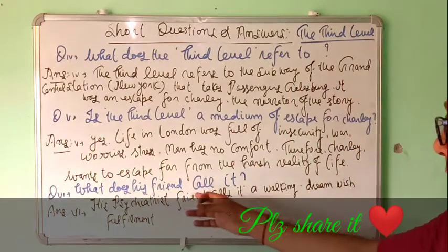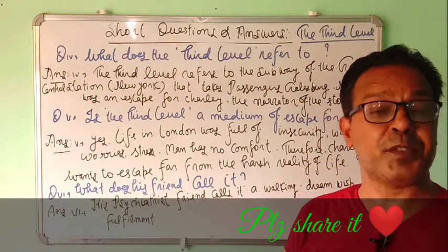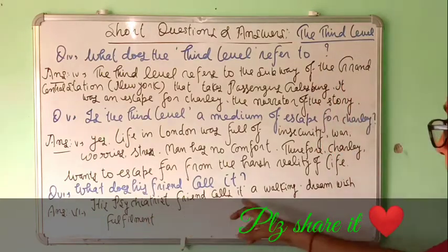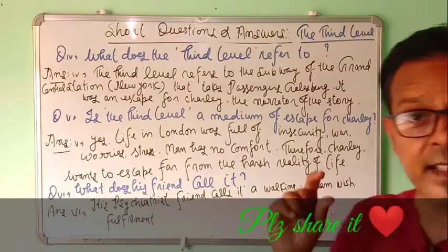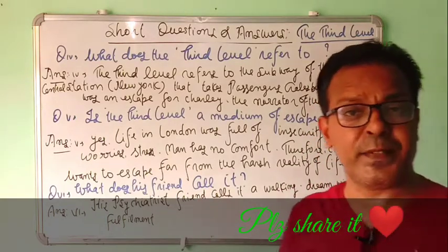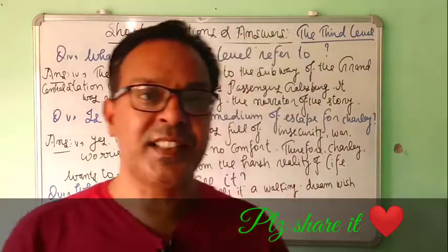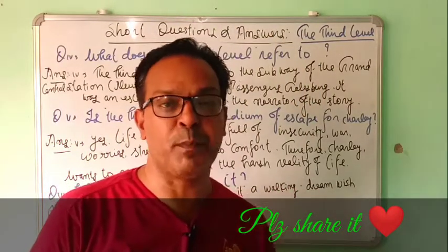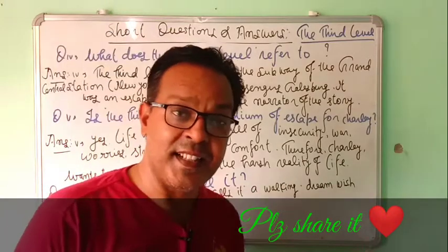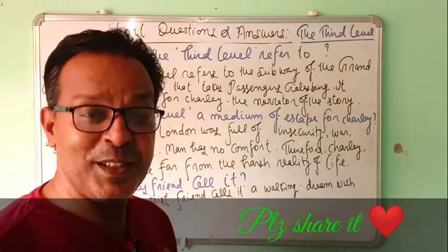Question Number Six: what does his friend, the psychiatrist, call this habit? His psychiatrist friend calls it a 'waking dream wish fulfillment.' The answer is short but important. उसका मनोचिकित्सक दोस्त इस आदत को एक चलता-फिरता ख्वाब देखना कहता है — दिवास्वप्न — जैसे Charlie खयालों में इस संसार से कहीं दूर चला जाता है।